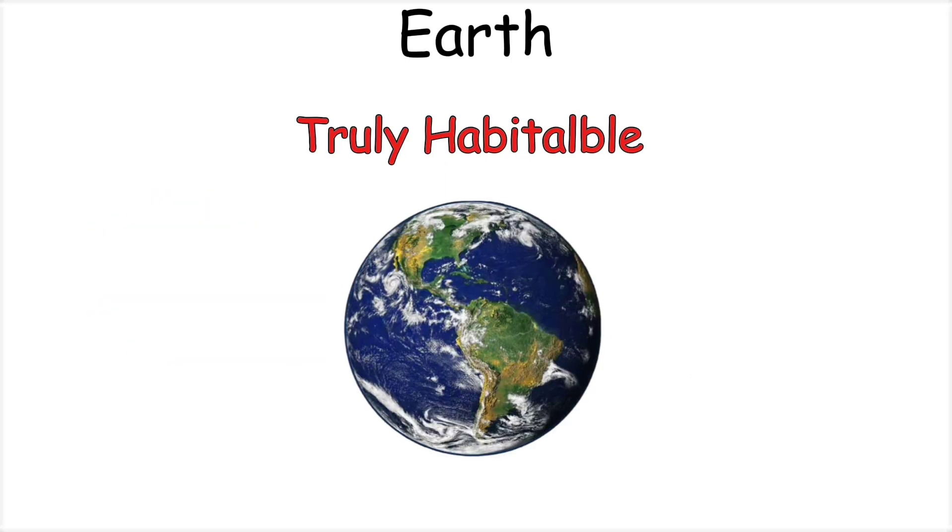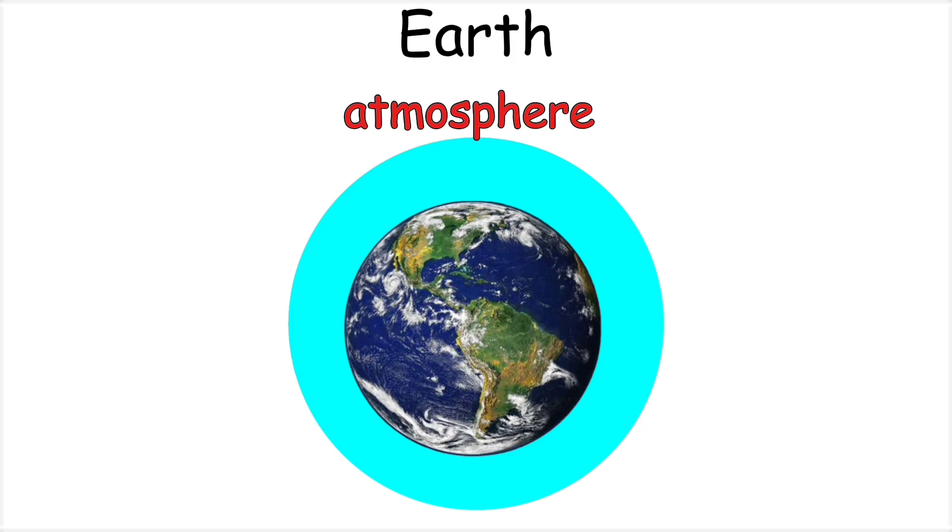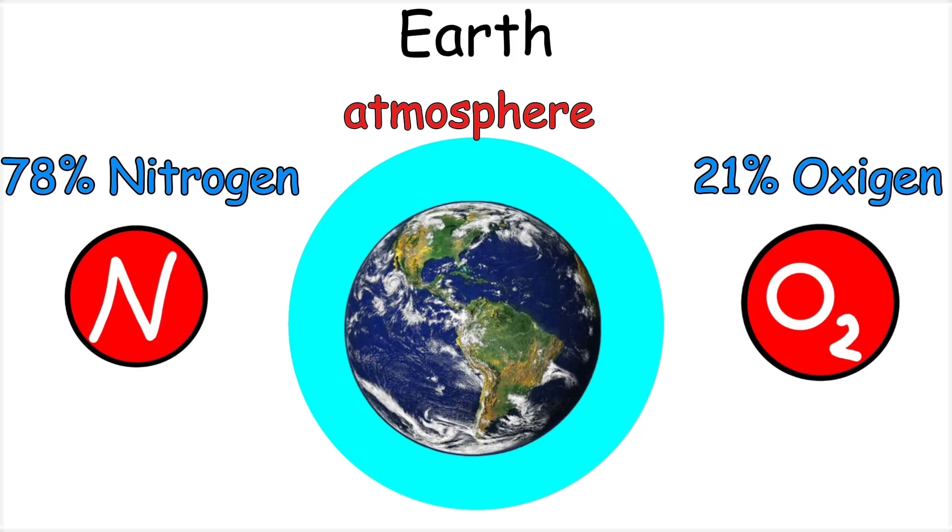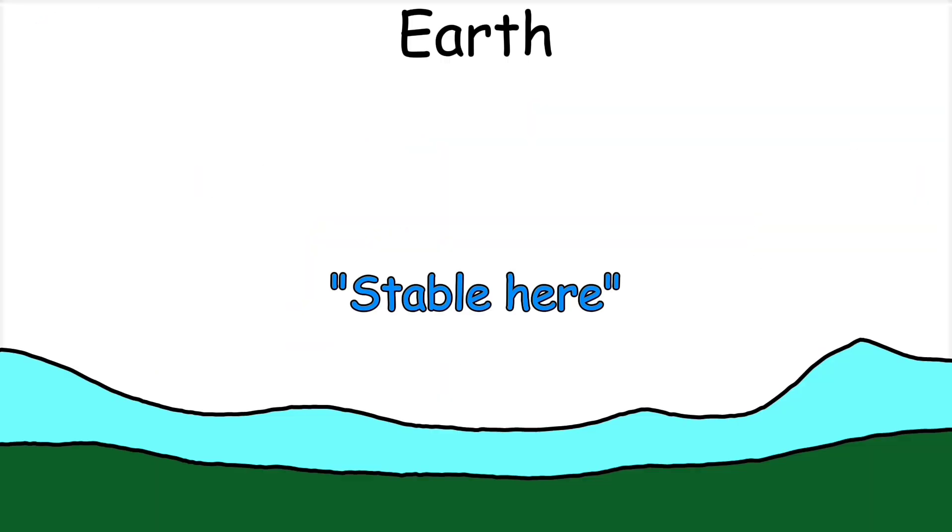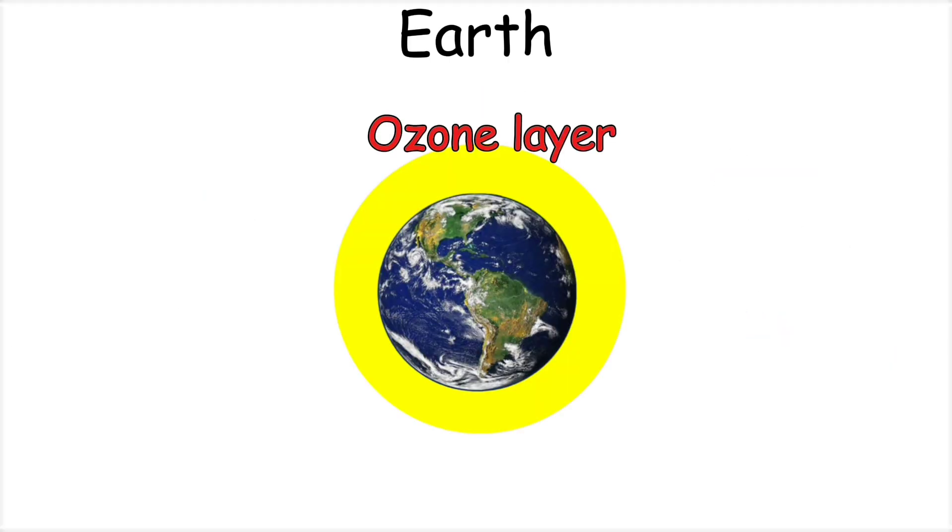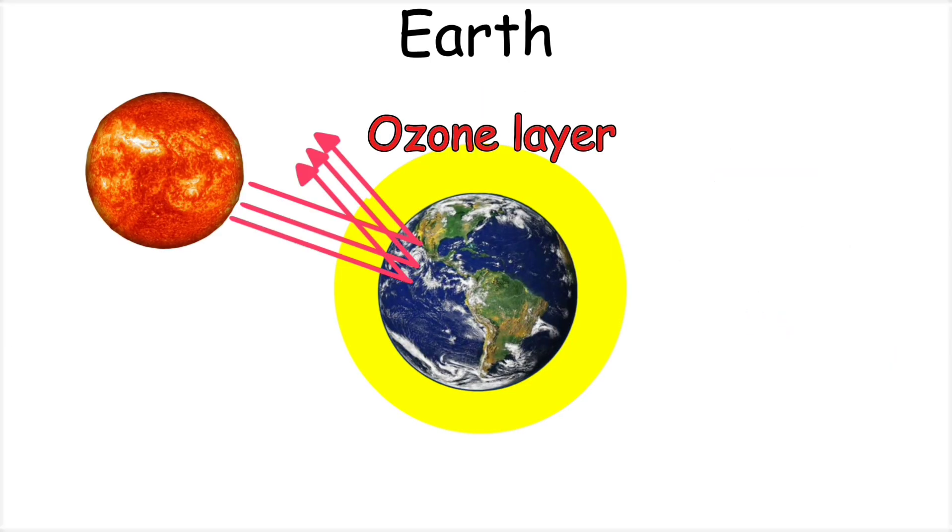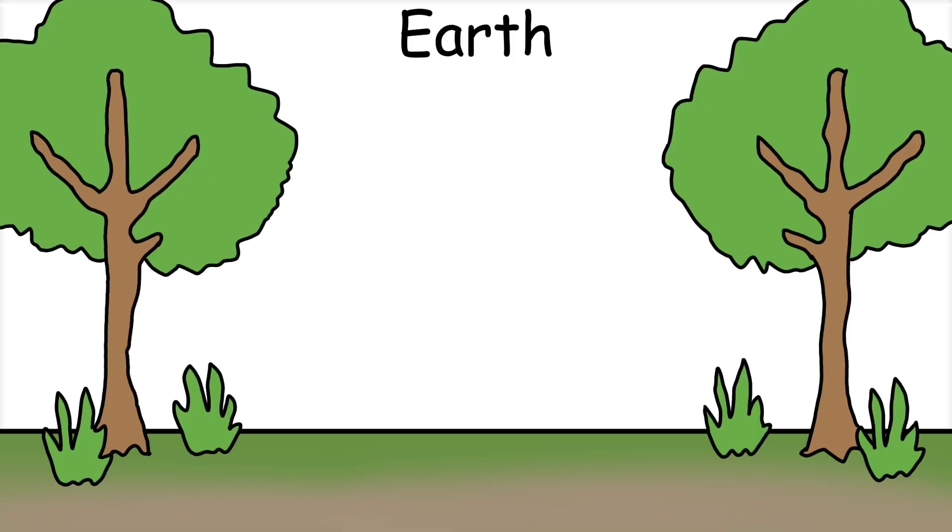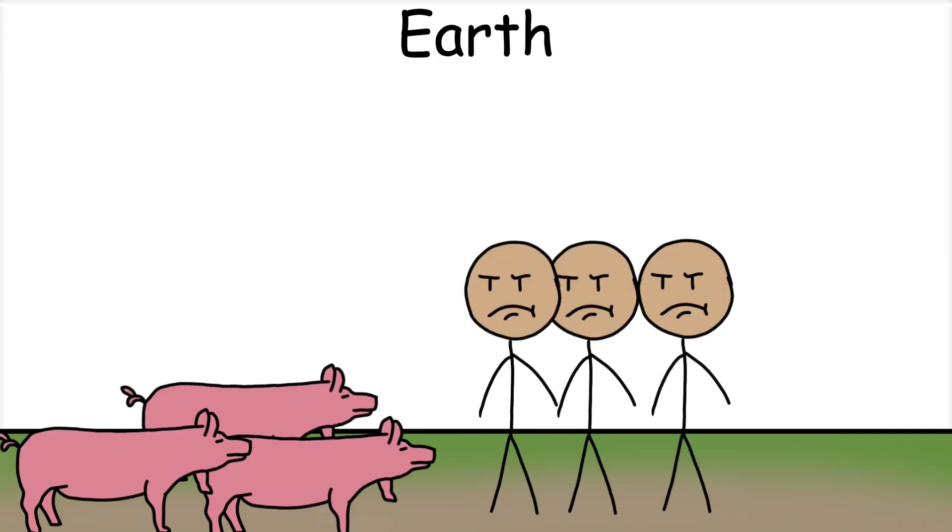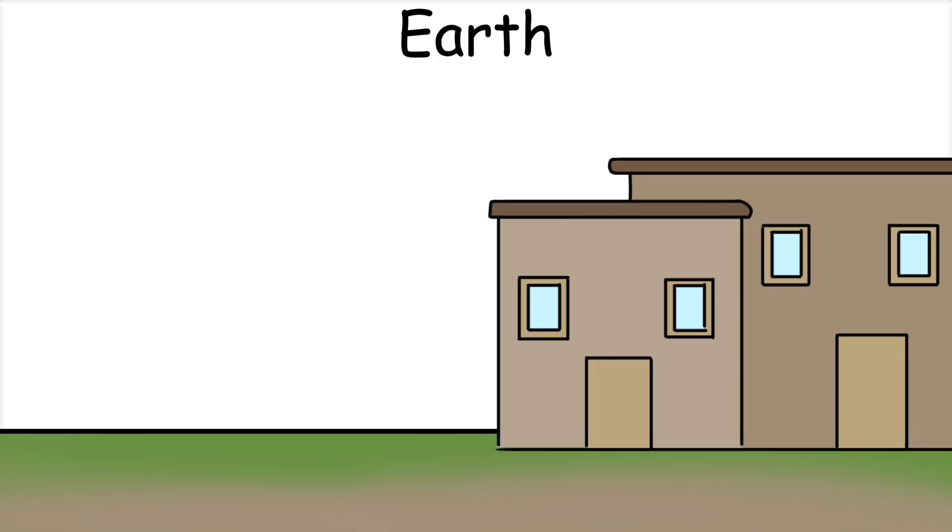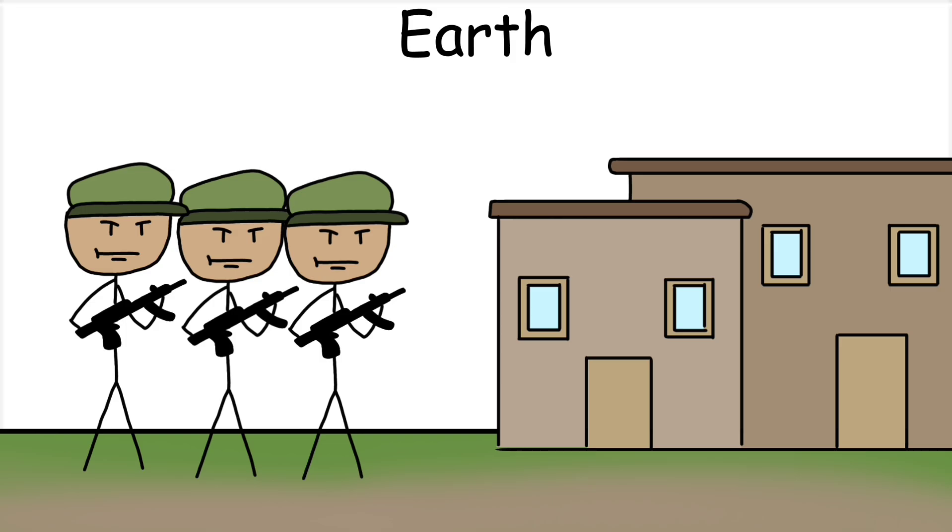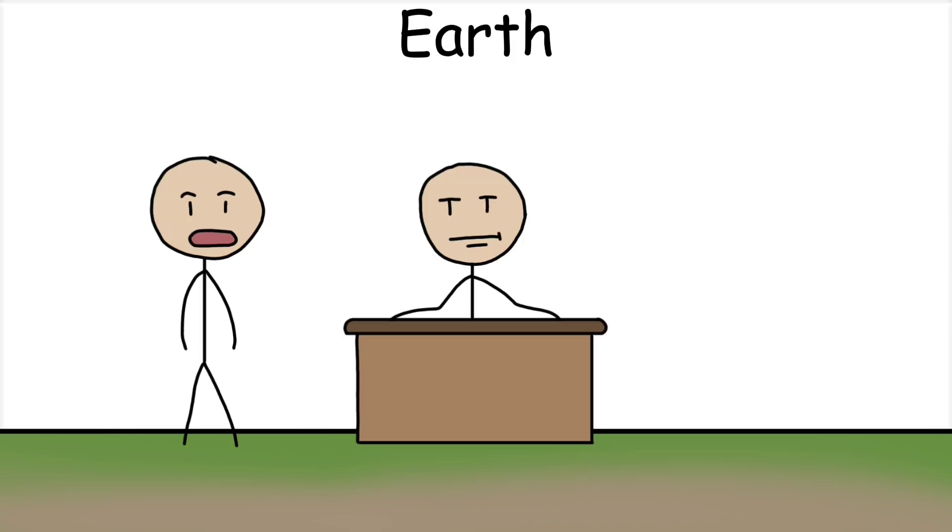Earth is the only planet in our solar system that is truly habitable for humans. A balanced atmosphere made of 78% nitrogen, 21% oxygen, and small amounts of other gases makes breathing possible. Water is stable here in all three forms: liquid, solid, and gas. Another big advantage is the ozone layer, which protects us from dangerous ultraviolet rays. Our Earth looks very beautiful. There are trees and plants here that give us oxygen. There are animals here and humans too. Humans have built beautiful houses. And to protect all of us, there is also the military. And to run this whole world, there is also the government.